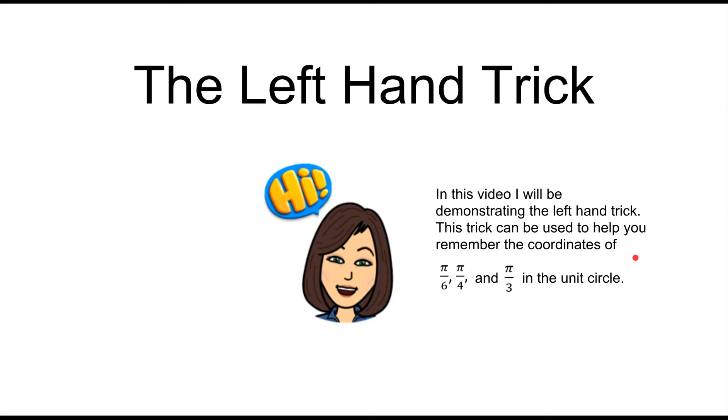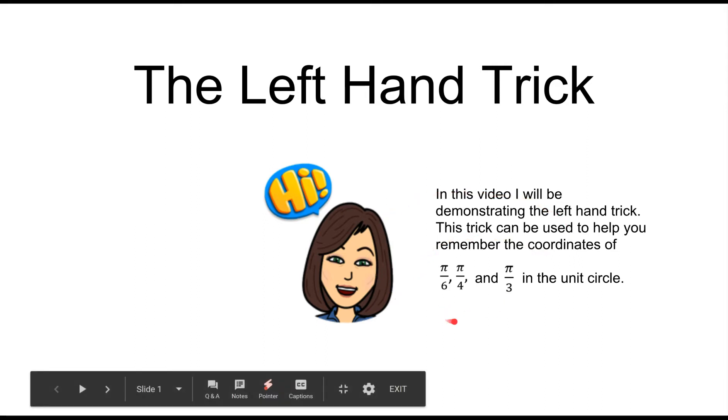With this trick, you'll be able to easily remember the coordinates for the first quadrant angles in the unit circle. That would be pi over 6, pi over 4, and pi over 3.